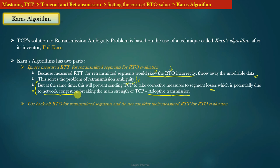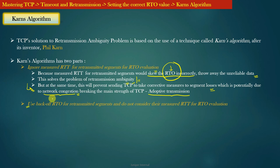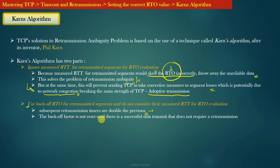If TCP does not consider any RTT of retransmitted segments for RTO evaluation, how will TCP respond to congestion in the network? TCP is retransmitting segments because their ACK did not arrive, and non-arrival of ACK is an indication of congestion. TCP should not mess up the RTO computation, but also must respond to network congestion. That is why the second part of Kahn's algorithm kicks in for compensation: subsequent retransmission timers are doubled from the previous — this is the backoff algorithm. The backoff factor is not reset until there is a successful data transmission that does not require retransmission.